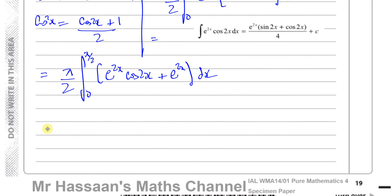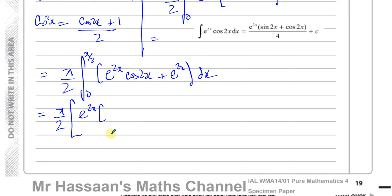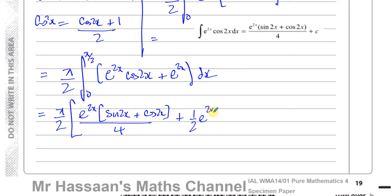Using the part A result, the full expression becomes (π/2) times [e^(2x)(sin(2x) + cos(2x))/4 + (1/2)e^(2x)] evaluated between 0 and π/2. Simplifying by taking 4 as a common denominator: (π/8) times [e^(2x)(sin(2x) + cos(2x) + 2)] evaluated between π/2 and 0.